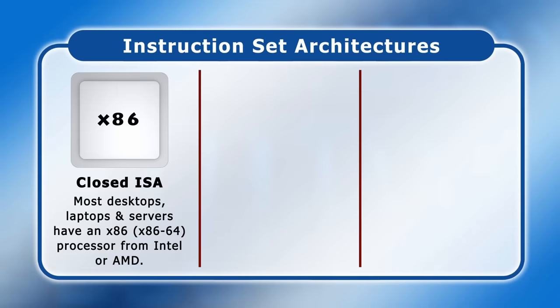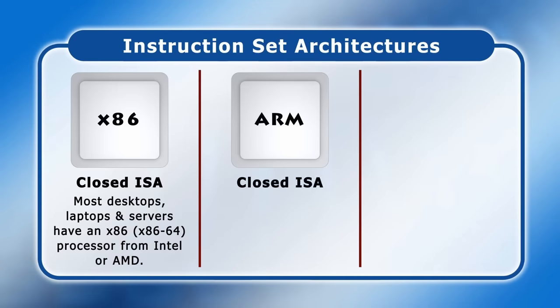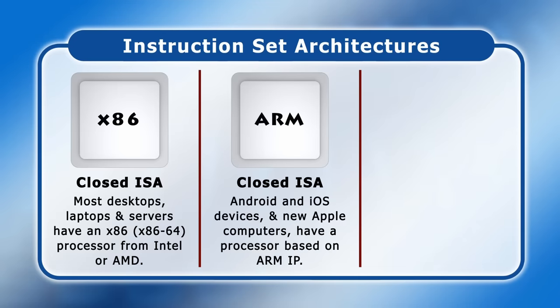Alongside x86, today's other dominant ISA is ARM, with practically all Android and iOS devices and new Apple computers having a processor based on ARM intellectual property. Many different companies design and manufacture ARM processors, but because the ARM ISA is closed they all have to pay license fees to ARM Limited, which hence maintains control of its technology.